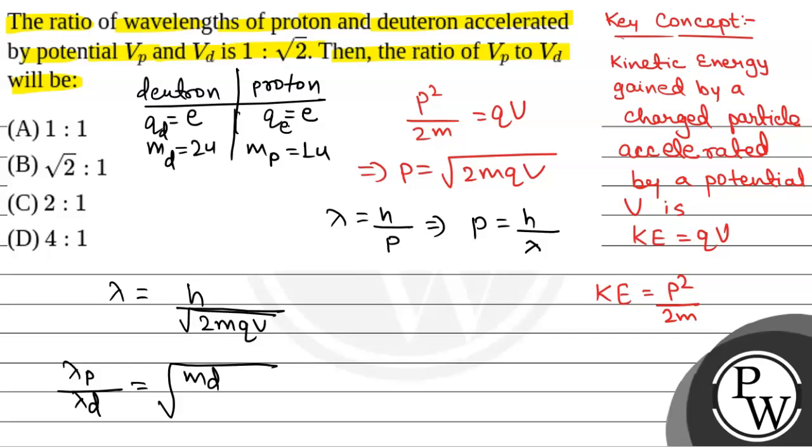So, we will compare. Lambda is inversely proportional to mass into potential, and Q is same. So, root over MD into VD by root over MP into VP. This is lambda of proton by lambda of deuteron. So, that will be equal to root over 2 into VD, because mass of deuteron is 2 unit, mass of proton is 1 unit. So, this will be VD, and that is equal to 1 by root 2.